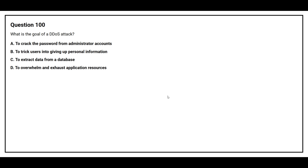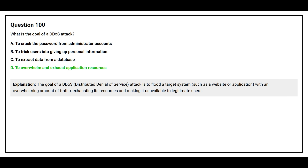Question number 100: What is the goal of a DDoS attack? Option A: To crack the password from administrator accounts. Option B: To trick users into giving up personal information. Option C: To extract data from a database. Option D: To overwhelm and exhaust application resources. The correct answer is Option D: To overwhelm and exhaust application resources. The goal of a DDoS attack is to flood a target system, such as a website or application, with an overwhelming amount of traffic, exhausting its resources and making it unavailable to legitimate users.